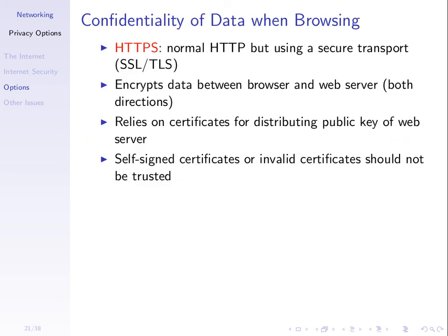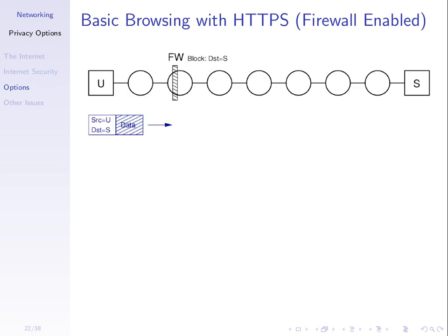The first option is to use HTTPS, which we've studied in depth — we encrypt the data between browser and server and use certificates to assist in key distribution. With the firewall enabled and a rule blocking anything going to destination S, when we use HTTPS, the IP source is still you and the destination is still S, with the data inside encrypted using SSL. The packet gets to the firewall and the firewall blocks it, because the destination is S. Using HTTPS does not bypass the firewall block — the firewall can still see who you're communicating with.